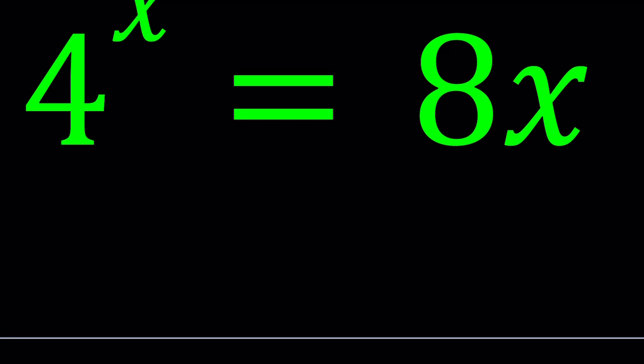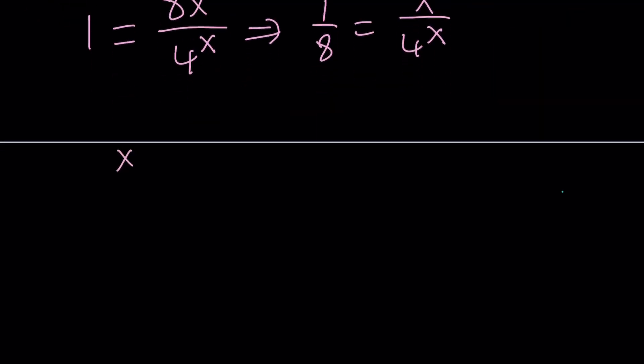That's going to give me 1 equals 8x divided by 4^x. The next thing I'm going to do is get rid of the 8 by division. So let's divide both sides by 8 and that's going to give me 1/8 equals x/4^x. Let's go ahead and write the variables on the left and then manipulate. Do manipulate expressions. Do not manipulate people.